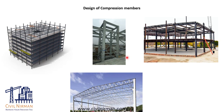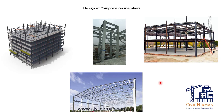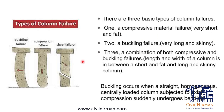Depending on its length, a compression member can be categorized in three ways: short compression member, intermediate compression member, or long compression member. Short compression members fail by crushing or yielding. Intermediate compression members fail by yielding and buckling. Long compression members usually fail by elastic buckling.